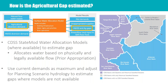For basins where we do not have models, we are using the current demands as a maximum and adjusting for the planning scenario hydrology to estimate gaps. The benefit is that these are highly over-appropriated systems, so we know there is not necessarily free river that may be available to meet increased demands. We have set the current demand as the maximum, and feel that any additional demand would likely just increase the agricultural gap. There will be a report that talks about how the demands were brought into the models and the results, because these water supply results will serve as the gap estimate for both M&I and agricultural statewide.